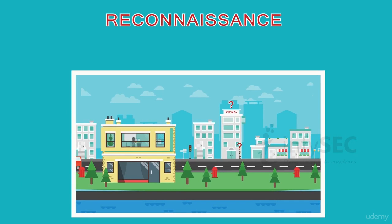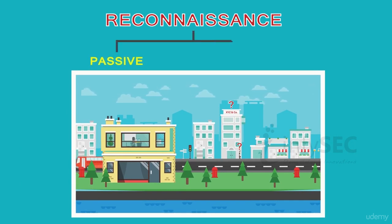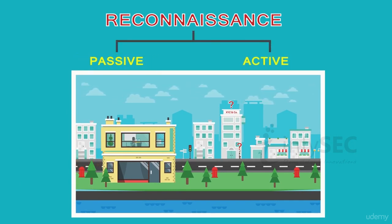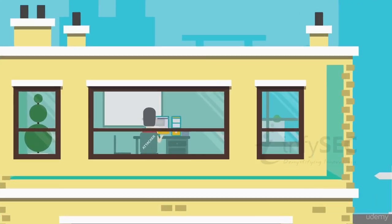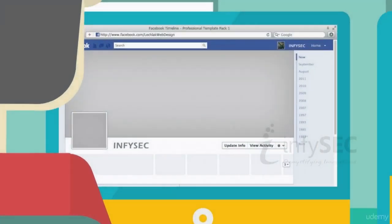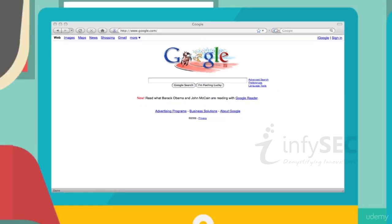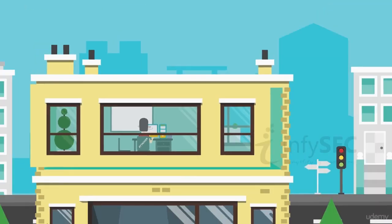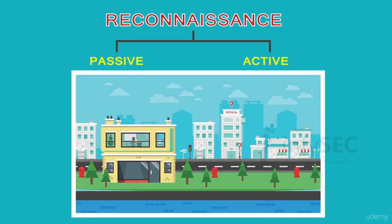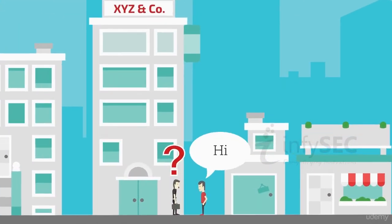Reconnaissance can be done in two ways: passive or active. Passive reconnaissance is the method of gathering information without directly intruding on the target — that is, by probing the web. Active reconnaissance involves direct intrusion on the target to collect information.